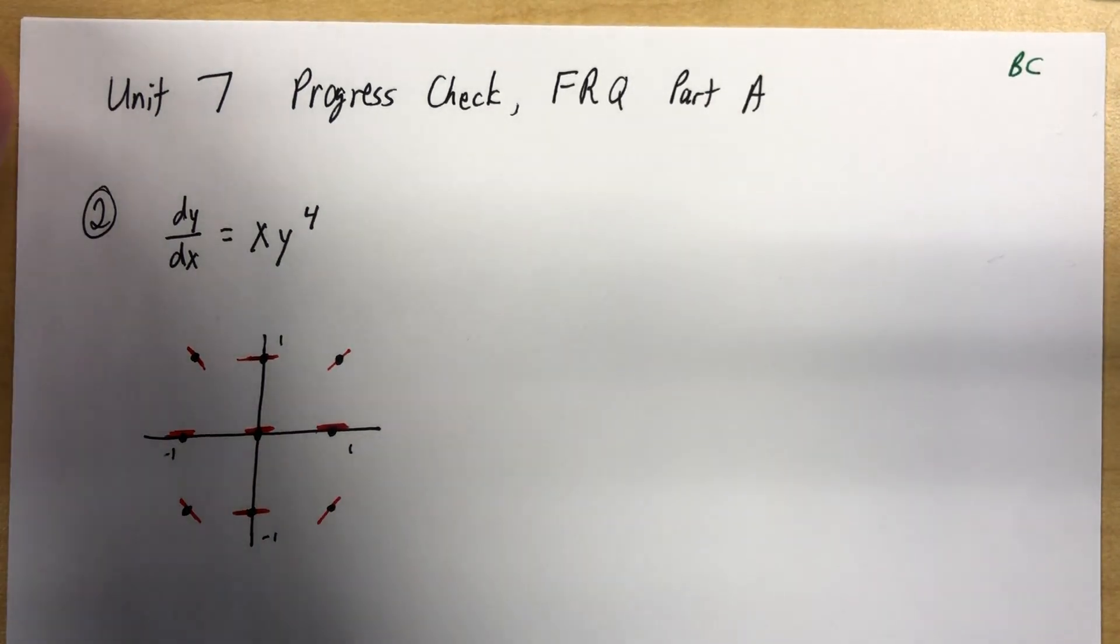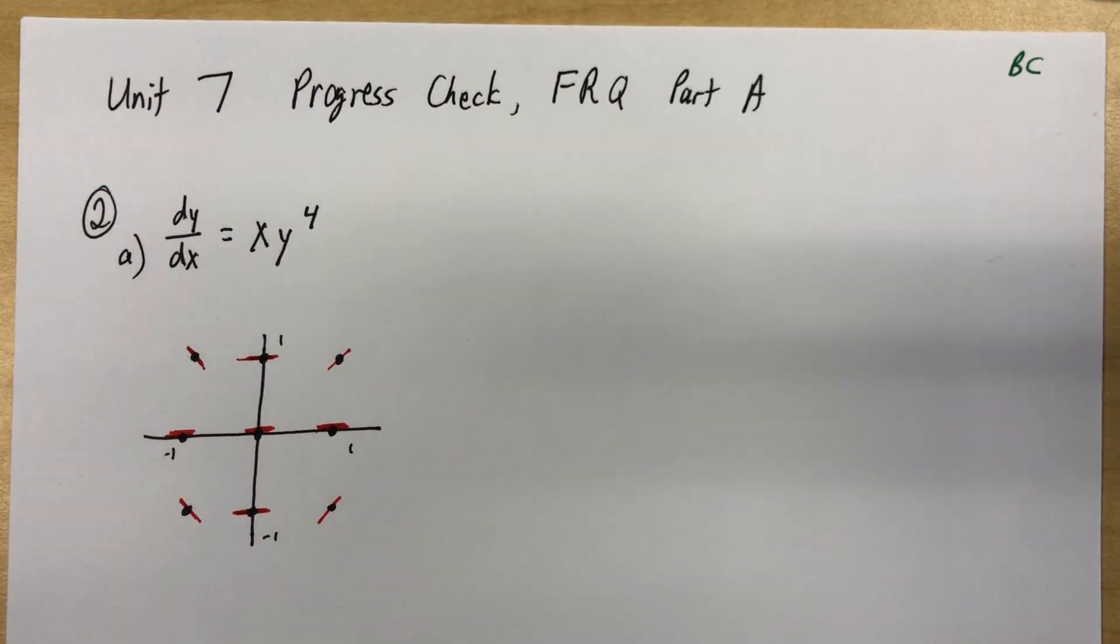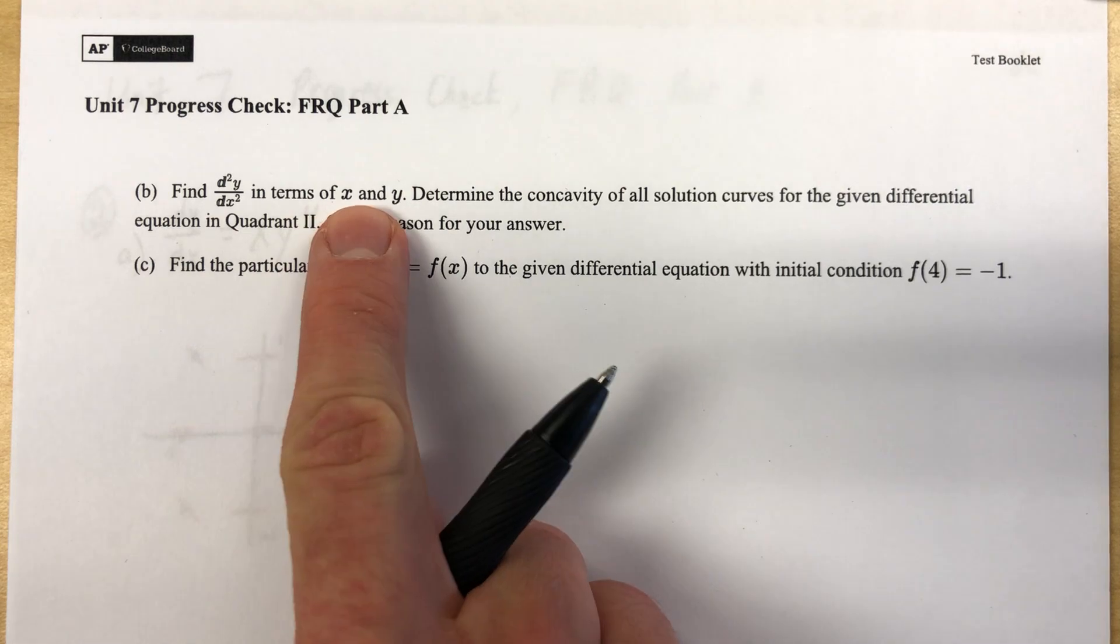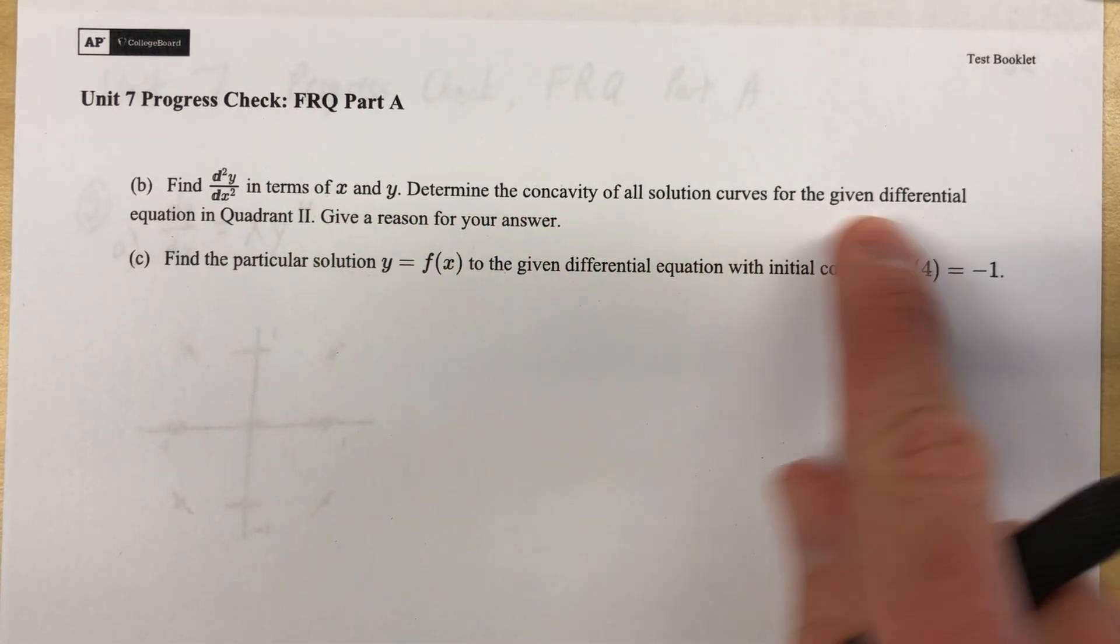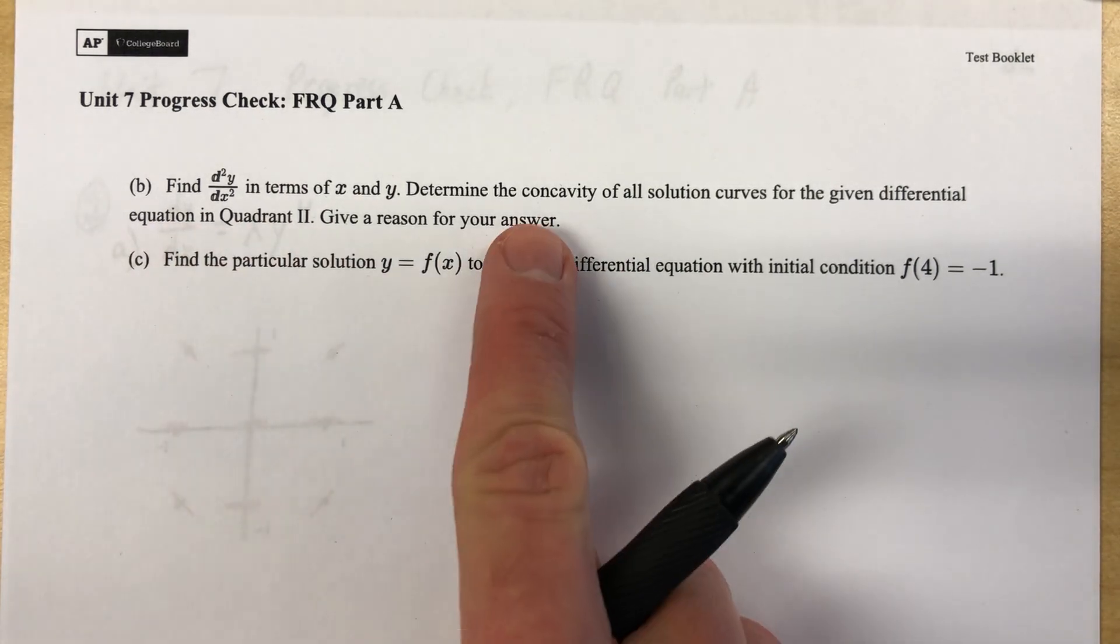Let's move on to part B, which asks us to find the second derivative and then it goes a little bit further into that. And it tells us to talk about what we know in quadrant 2. Find the second derivative in terms of x and y. Determine the concavity of all solution curves for the given differential equation in quadrant 2. Give reasons for your answer. Well, second derivative determines concavity.